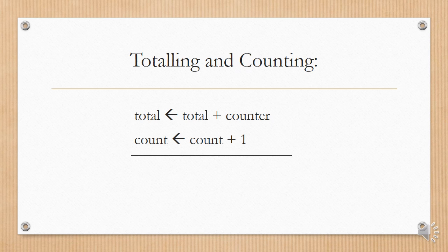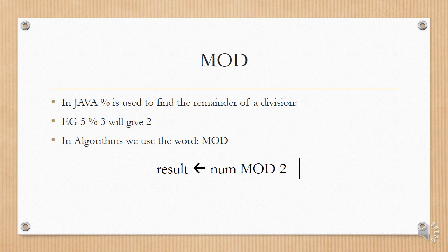For totaling, counting, or calculations, you would say total gets the value total plus counter, or count gets the value count plus one. In Java, the percent sign is used to find the remainder of a division, and we call this mod. An example would be that five mod three gives you two, because five divided by three is one with a remainder of two. In algorithms we use the word mod — for example, result is assigned num mod two.